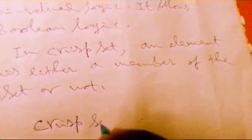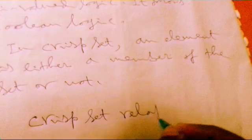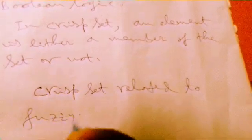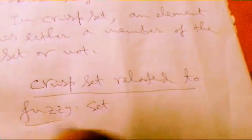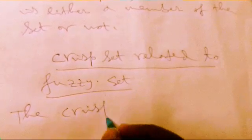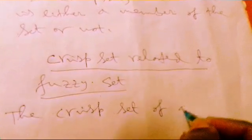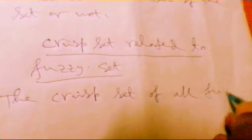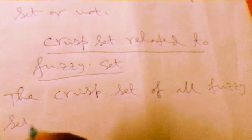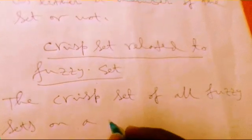Now, crisp set related to fuzzy set, how to get this relation. The crisp set of all fuzzy set on a universe U is denoted with, it is by notation.